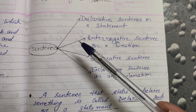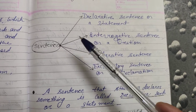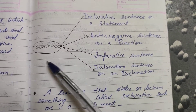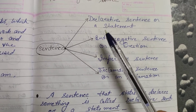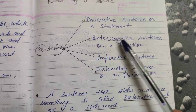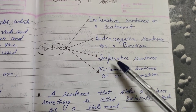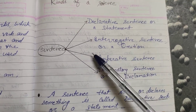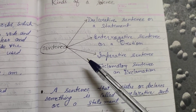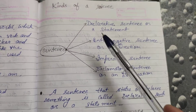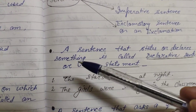A sentence is one which has complete meaning. There is a subject, verb, and object — jabhi mein subject, verb, object ko add karta hoon, ek sentence banta hai jiska apna complete meaning hota hai, jisko hum sentence kehte hain.